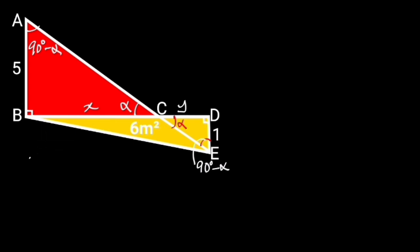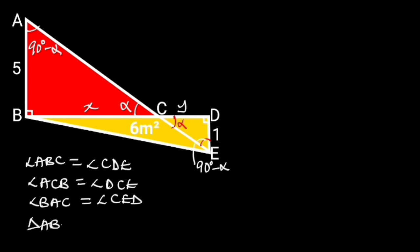Comparing triangle ABC and triangle CDE, observe that angle ABC is equal to angle CDE, angle ACB is equal to angle DCE, and angle BAC is equal to angle CDE. This shows that triangle ABC is similar to triangle CDE.